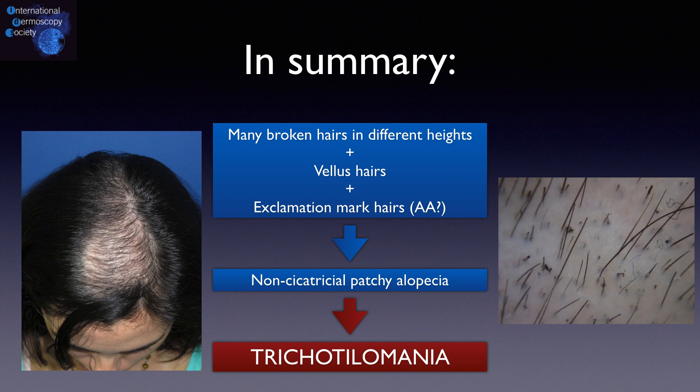In this case, later on, when the trichotillomania got better, the patient also had a new typical plaque of alopecia areata. So maybe, at that time, she had both trichotillomania and alopecia areata.